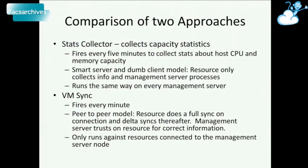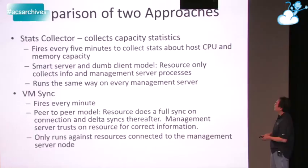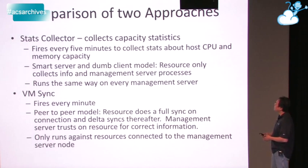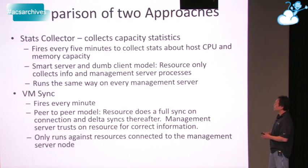Let's compare two approaches seen in CloudStack for background tasks. There's a Stats Collector, written in version 1.0 and still present today — this is the component you have to disable for horizontal scaling. It collects capacity statistics for hosts and storage, firing every five minutes. It follows a smart server and dumb client model, where the client just collects information and the management server always processes it. It runs exactly the same way on every single management server in the cluster.